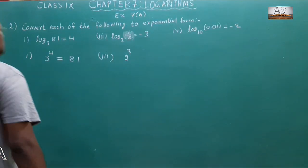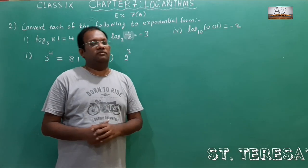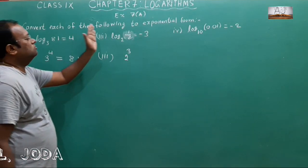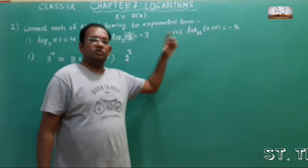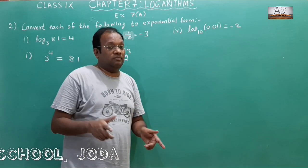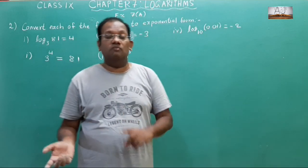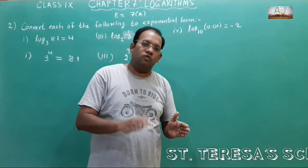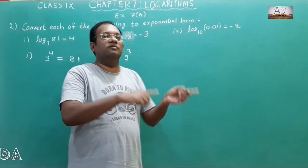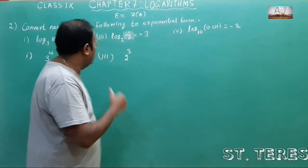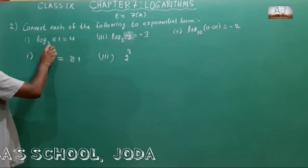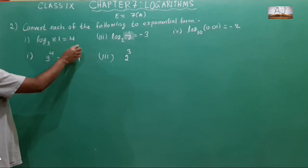Now let us do question number 2 of Exercise 7A. It is asked to convert each of the following to exponential form. In question number 1, exponential form was given and we converted it into log form. This is the opposite — here log form is given and we have to convert it into exponential form.